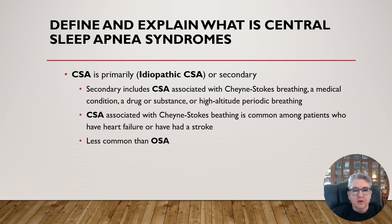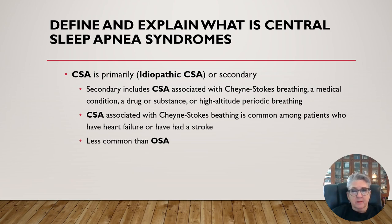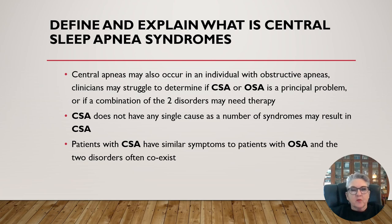Central sleep apnea is primarily idiopathic or secondary. Secondary includes central sleep apnea associated with Cheyne-Stokes breathing, a medical condition, a drug or substance, or high-altitude periodic breathing. Central sleep apnea associated with Cheyne-Stokes breathing is common among patients who have heart failure or have had a stroke. Central sleep apnea is less common than obstructive sleep apnea, and CSA may also occur within an individual that has obstructive apneas. Clinicians may struggle to determine if CSA or OSA is the principal problem.